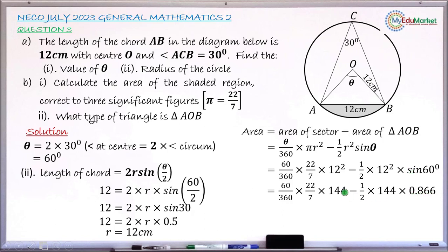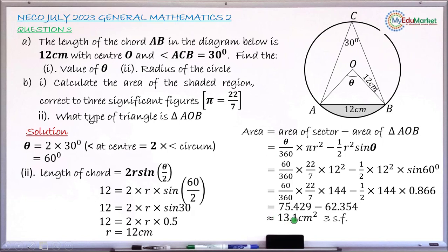Multiplying each part: (60/360) × (22/7) × 144 gives 75.429, and (1/2) × 144 × 0.866 gives 62.354. Subtracting and rounding to 3 significant figures gives a final result of 13.1 cm². This is the area of the shaded segment.